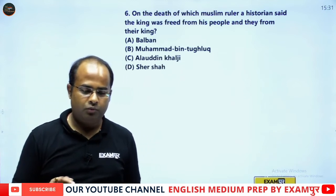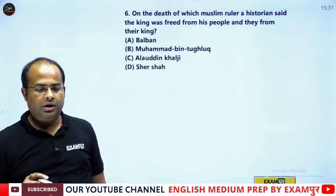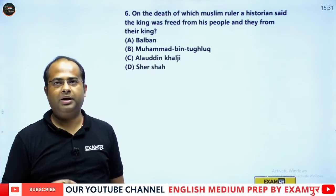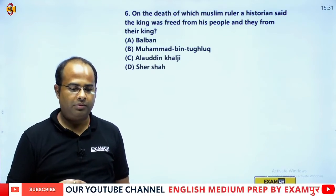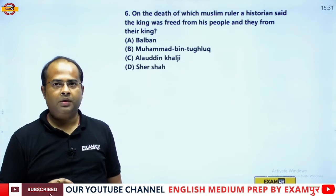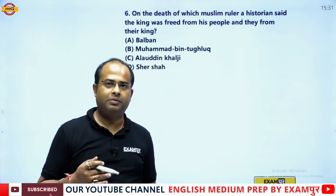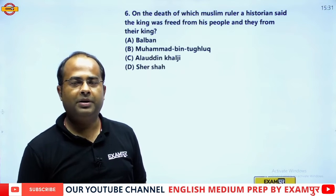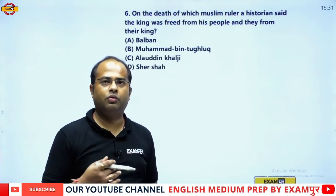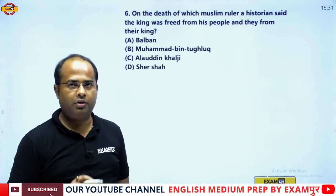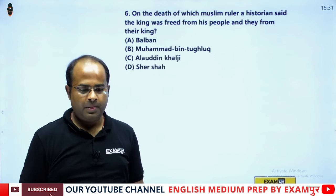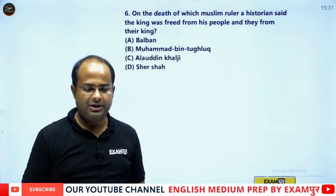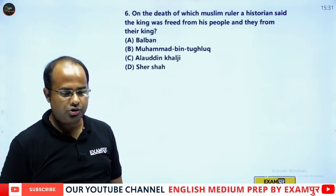The next question: on the death of which Mughal-era Muslim ruler did the historian say, 'The king was freed from his people and the people were freed from the king'? Is it Balban, Muhammad bin Tughlaq, Alauddin Khilji, or Sher Shah Suri?